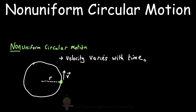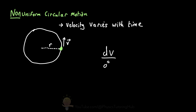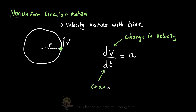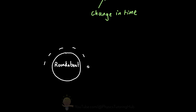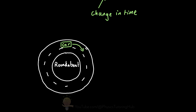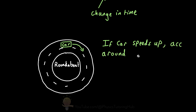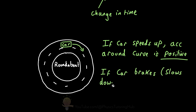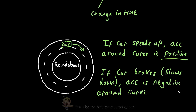Whenever something changes its speed, it's undergoing acceleration, described by the equation delta V over delta T equals acceleration — a change in velocity over a change in time. An example of non-uniform circular motion is accelerating your car around a bend or a roundabout. This acceleration could be positive, meaning you're speeding up, or negative, meaning you're slowing down by hitting the brakes.